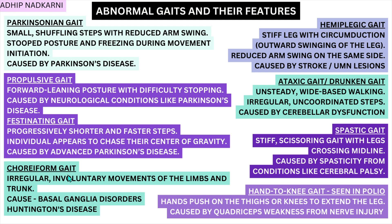Next is choreoform gait, which involves irregular involuntary movements of the limbs and trunk. This was a very hard gait to mimic, so checking YouTube videos for this one is recommended. It is caused by disorders in the basal ganglia such as Huntington's disease.